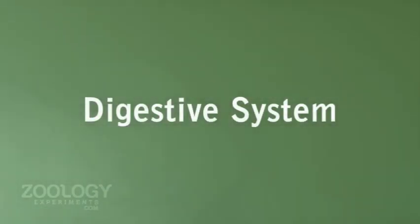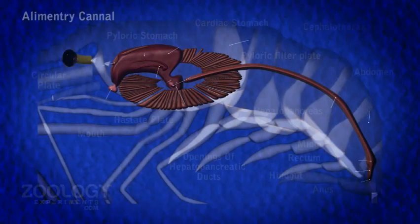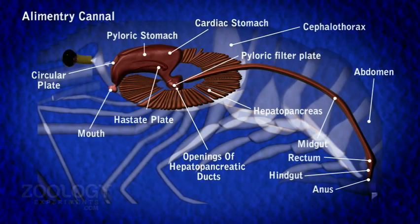Digestive System. The Elementary Canal consists of mouth, buccal cavity, esophagus, stomach, intestine, and rectum.